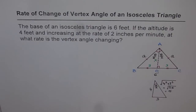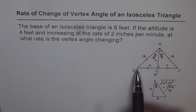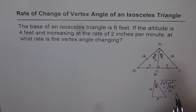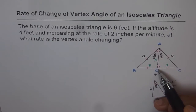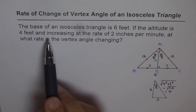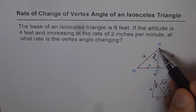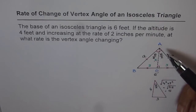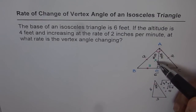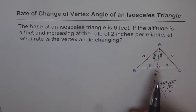To represent this situation, we have a diagram here. We have a triangle ABC. Base BC is 6 feet, and that is the height of the triangle. The altitude or height is 4 feet and increasing at 2 inches per minute. At any instance of time, let us say the altitude is x. We define a variable x which represents altitude, and the unit we are using is feet, since the base is in feet.